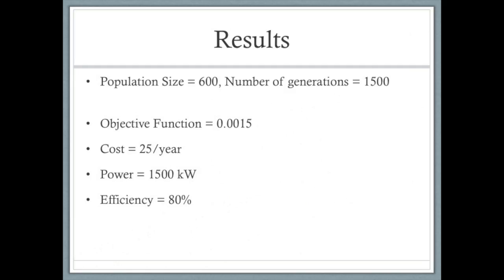Currently, my average results are as shown. With a population of 600 and 1,500 generations, my solutions have an average objective function of 0.0015, the cost is 25 per year for the farm, the total power is 1,500 kilowatts, and the efficiency is 80%.